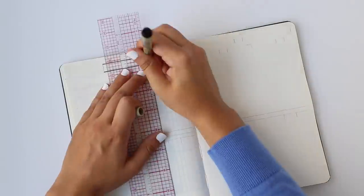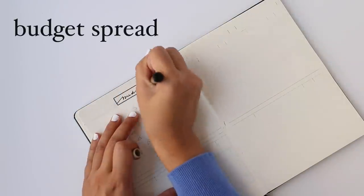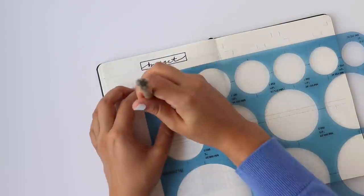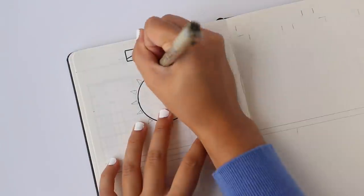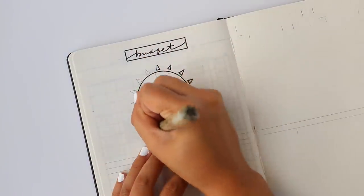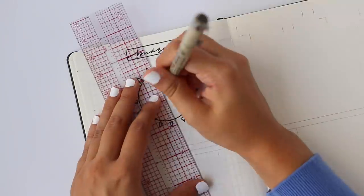This next spread is always a popular request and that is the budget spread. So I created this budget spread with the understanding or the assumption that we are already pretending that the fixed expenses are out of the way.